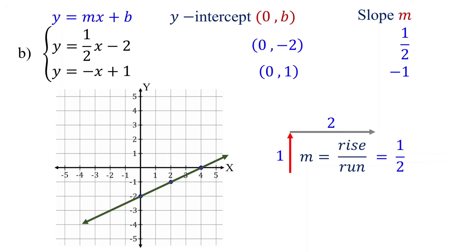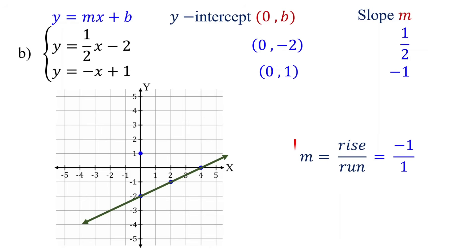Now, let's plot the graph of the second equation. As we did before, we start by plotting the y-intercept, which is located at (0, 1). Its slope is negative 1, which is the same as -1/1. So, the rise is 1 unit down and the run is 1 unit to the right.